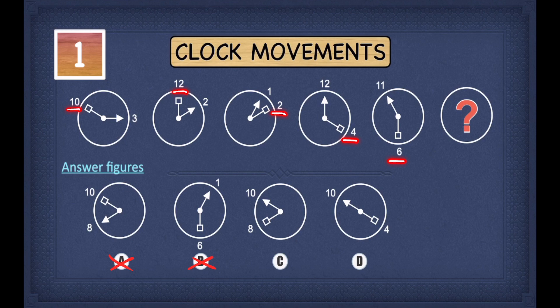So once again, what do we have to do to the number on the left to get the number on the right? To get from ten to twelve, we have to add two. To get from twelve to two, we have to add two.